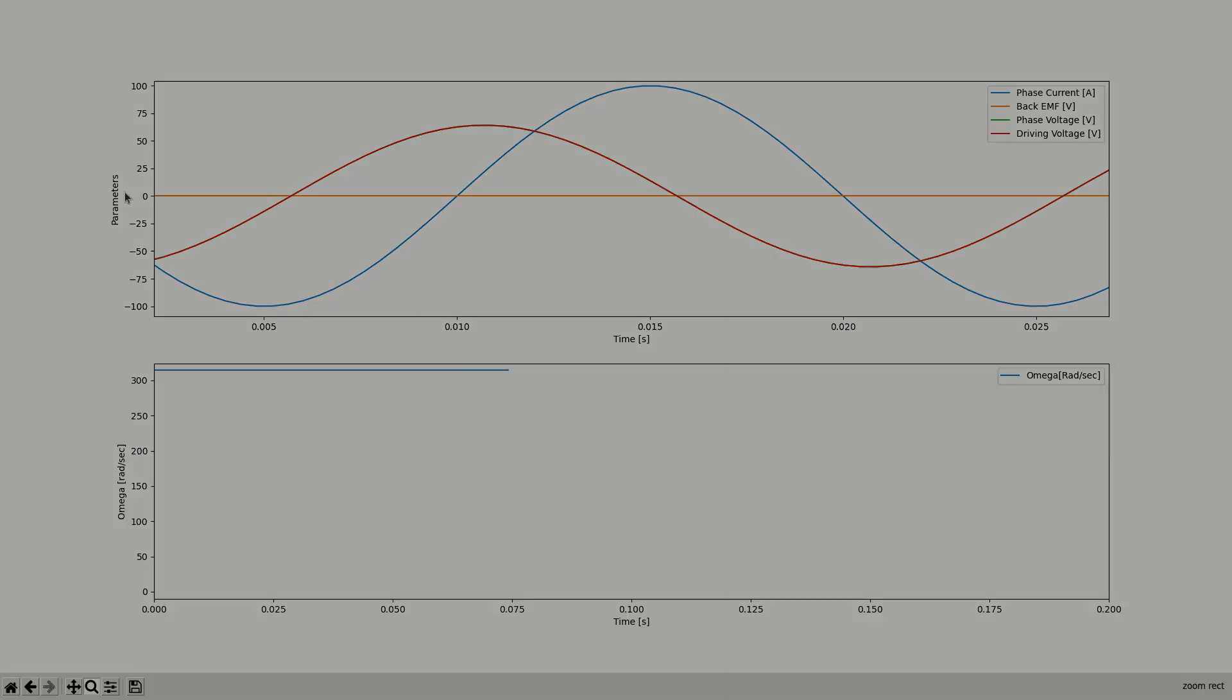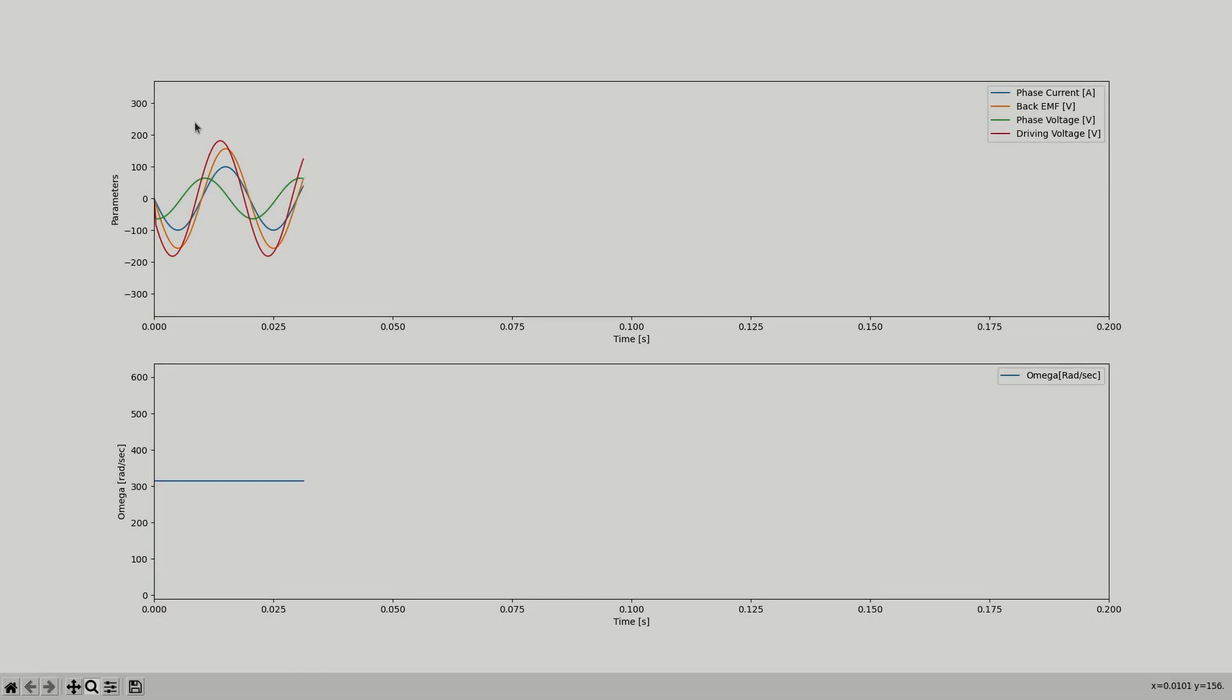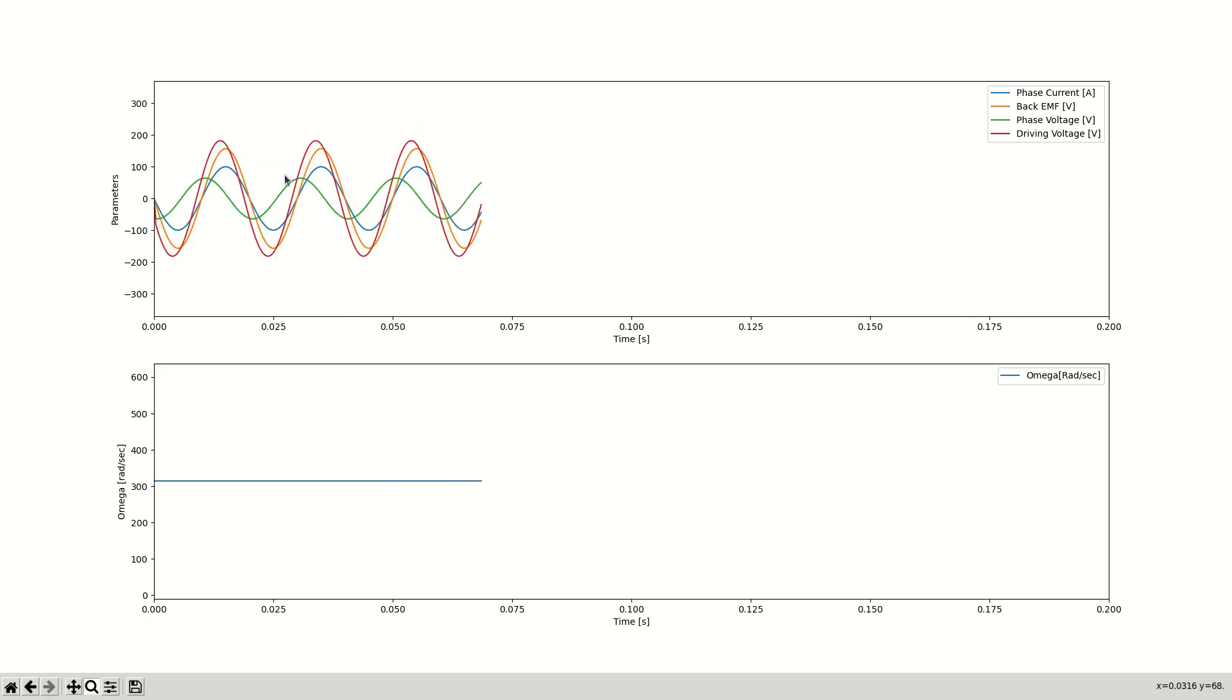Now let's set the back EMF constant to a value of 0.5 volts per radian per second. What would you expect to happen to the driving and phase voltages? We now have a back EMF opposing us, so we need a higher driving voltage. However, the phase voltage remains exactly the same, since that's the voltage we need to reach our desired current.